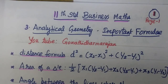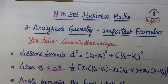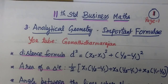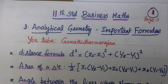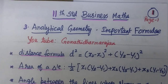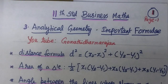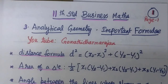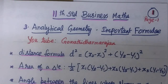And next also, we know from 10th standard the area of a triangle: half bracket x1 times (y2 minus y1) plus x2 times (y3 minus y1) plus x3 times (y1 minus y2), cyclic. We need to use this formula.